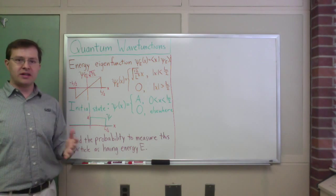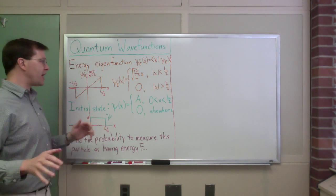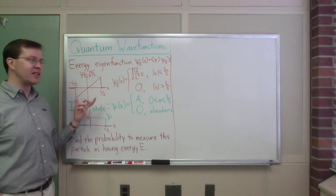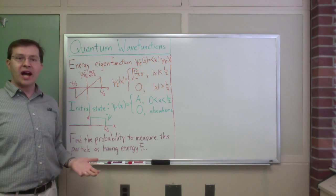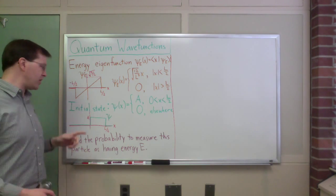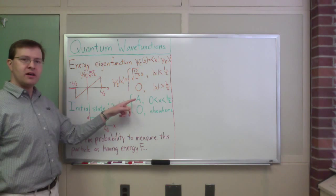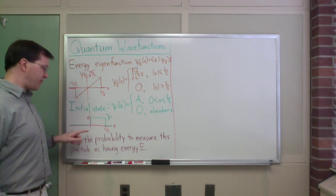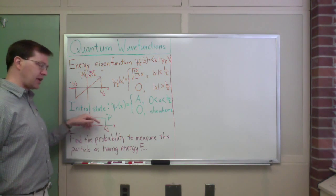So the point is, for the particular system that I'm considering, make-believe weird system, for that system, if I measured the energy of a particle in this state, I would always get the value E, energy E. Alright, so that's an energy eigenfunction, and I'm going to start in a state that is not that function. I'm going to start in this initial state, psi of x equal to some constant A for x between 0 and L over 2, and 0 everywhere else. I've drawn that here, between 0 and L over 2, it's a constant, otherwise it's 0.